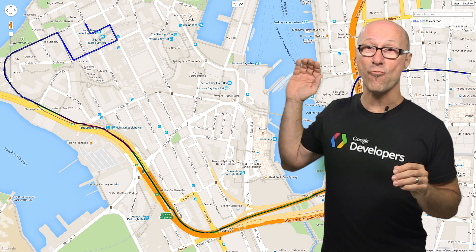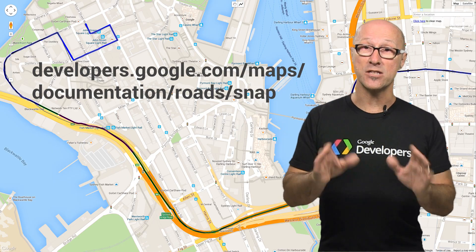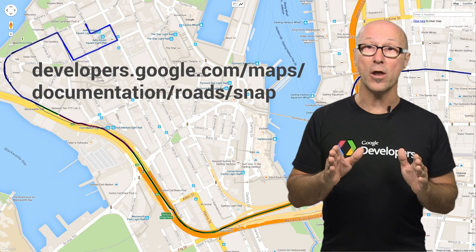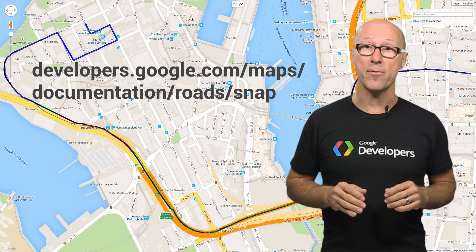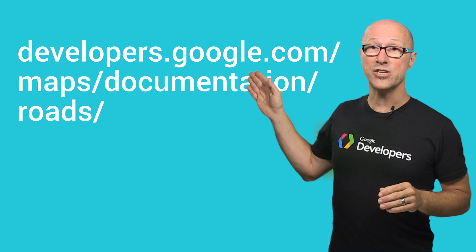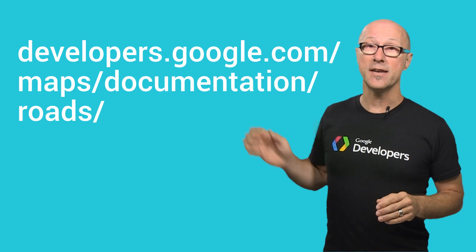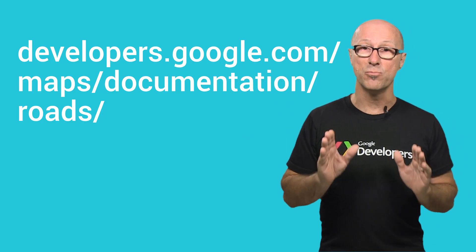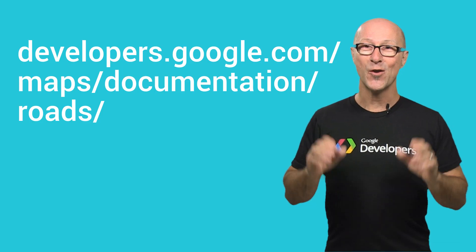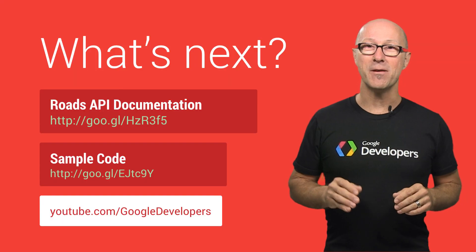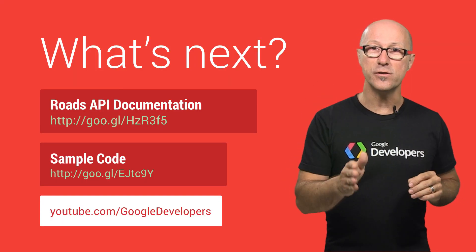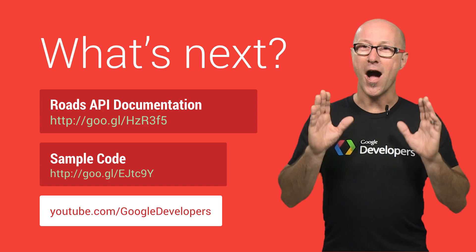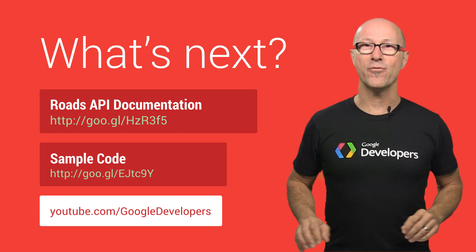We have a demo showing exactly that right here at this URL — you can see the source code and use it as an example to build into your location-aware app. We also have full documentation on this website, and I'd encourage you to incorporate this into any app that tracks movement along roads today. Try out the Roads API to give your users beautiful visualizations of where they've been. I'm Alex Danilo for the Google Developer Platform team.